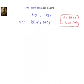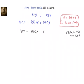Let's find the HCF of 345 and 989. We write 989 = 345 × 2 + remainder. Since 345 × 2 = 690, we subtract: 989 − 690 = 299. So the first step gives us 989 = 345 × 2 + 299.